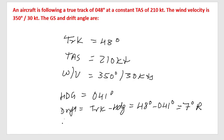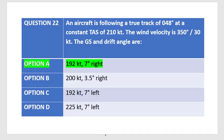And we got ground speed equal to 192 knots. So our answer is drift of 7 degrees right and ground speed of 192 knots. Therefore, the correct option for our question is option A, which is 192 knots and 7 degrees right.